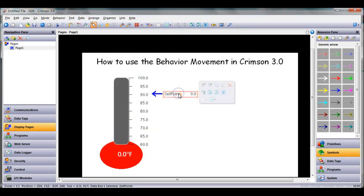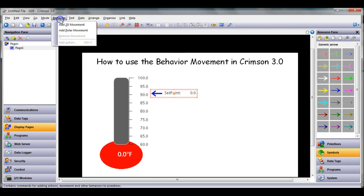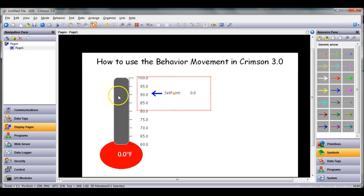Now I want this thing and this thing to both go up and down based on the setpoint value. I'm going to hold down the shift button, click these guys, and I'm going to group both of these together. Once I group everything together, my goal is to make this thing go up and down. I'm going to go to the behavior pulldown and choose add 2D movement.